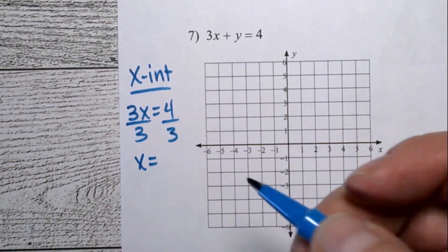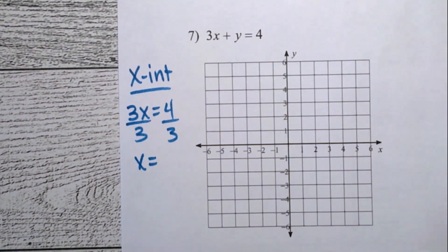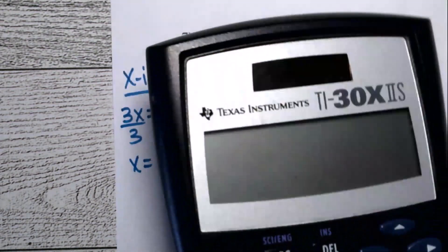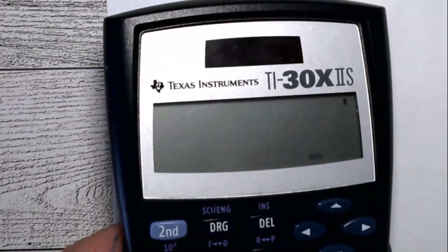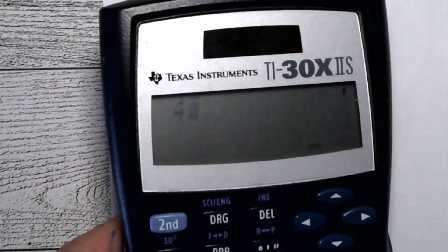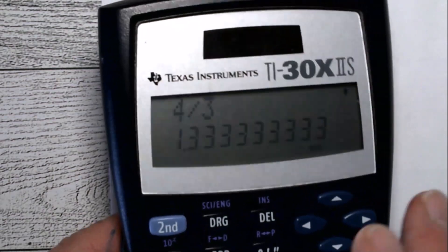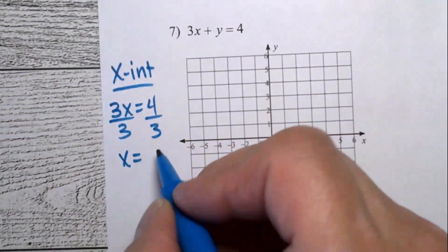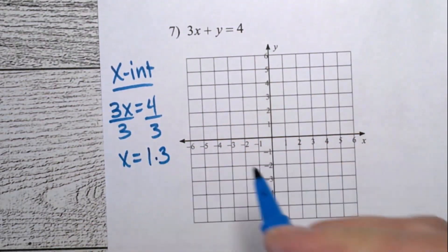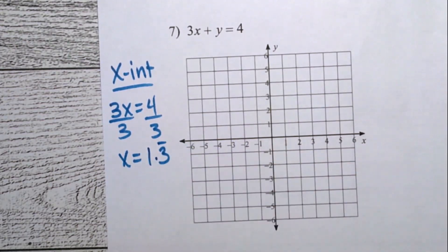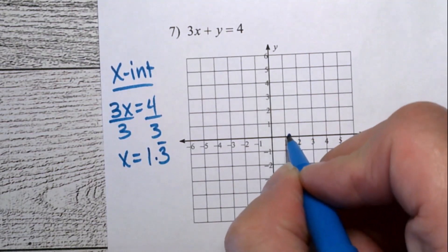And if you use your calculator, you can change that into a decimal. That might make it easier to graph. 4 divided by three. It's 1.3 repeating. So it's about 1.3. 1.3 repeating. And to graph that, it's a little bit more than one. So I'm just going to put a dot right there.